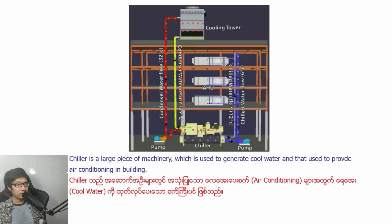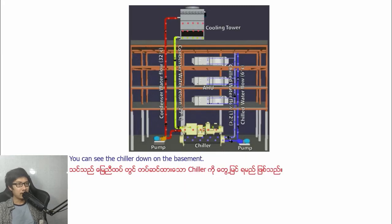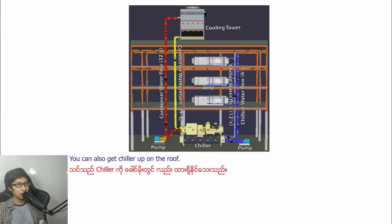A chiller is a large piece of machinery which is used to generate cold water, and that is used to provide air conditioning. You can see the chiller down in the basement. You can also get chillers up on the roof.